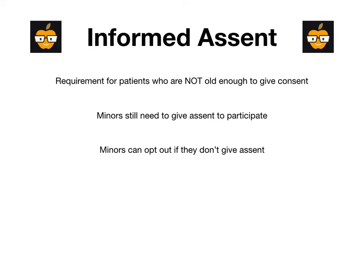In the ideal world, you as the physician would try to figure out where the disagreement is coming from and see if you can resolve that discrepancy. A question might ask which of the following is the best course of action when the legal guardian and the minor don't agree — the correct answer would likely be to attempt to find out why the minor does not give informed assent or why the legal guardians are giving informed consent. You always try to figure it out first and be neutral and understanding — that's a general theme in ethics.